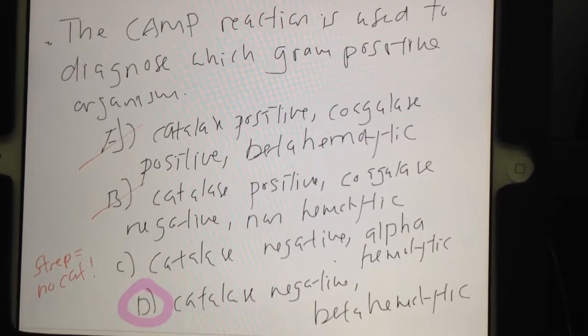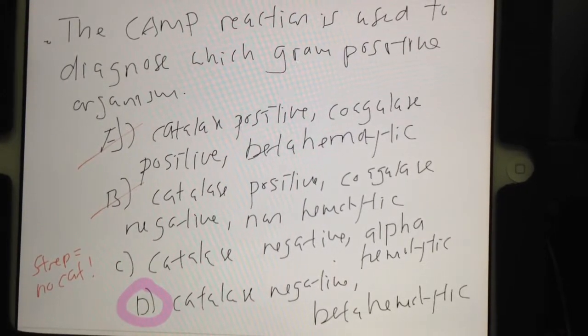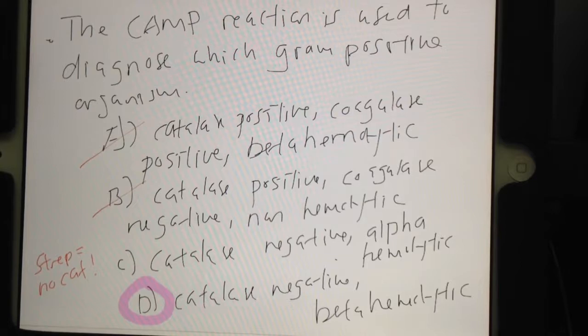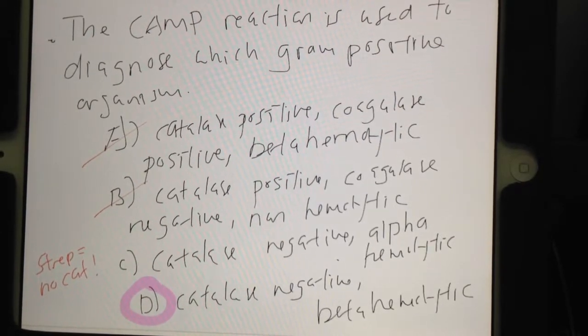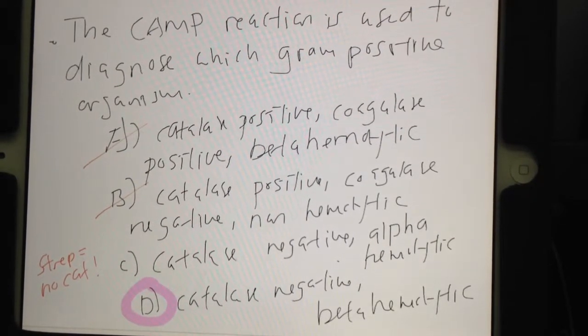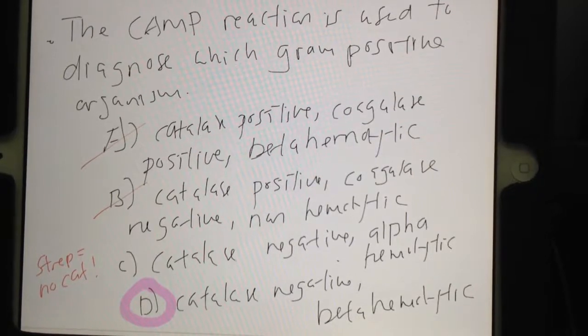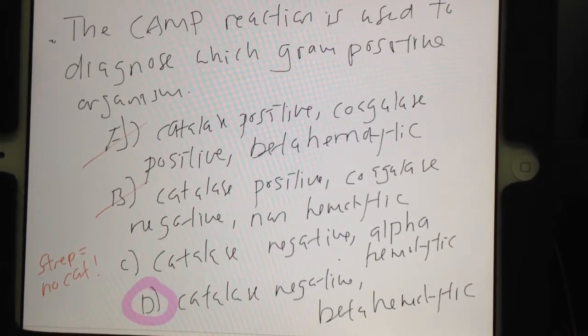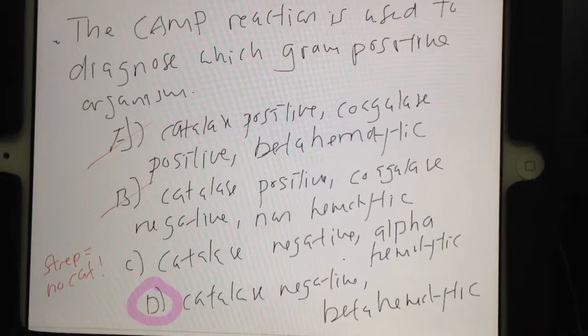So here it gives the choices: catalase-positive, coagulase-positive, and beta-hemolytic; or catalase-positive, coagulase-negative, non-hemolytic; C, catalase-negative, alpha-hemolytic; or D, catalase-negative and beta-hemolytic.